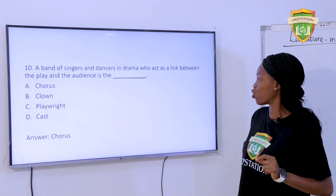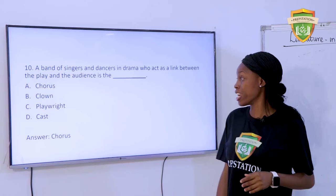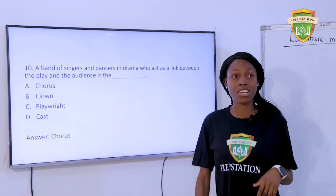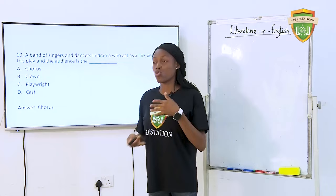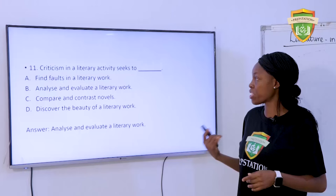A band of singers and dancers in drama who act as a link between the play and the audience is — A. Chorus. B. Clown. C. Playwright. D. Cast. The answer is the chorus. They don't necessarily come out to sing; sometimes they probably render a poem to show what's going to happen in the play.